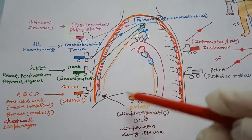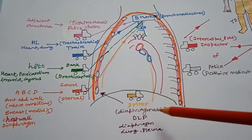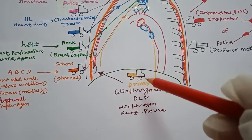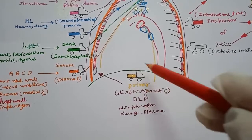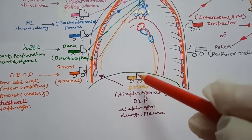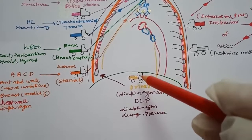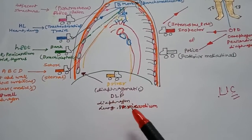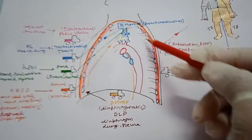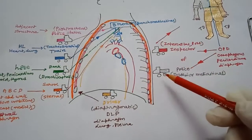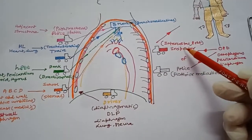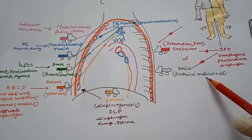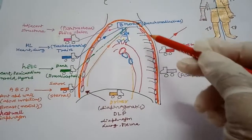The middle row of the primary channel comprises only one group: the diaphragmatic lymph node. Using the mnemonic 'Dilip' — the driver's name — D stands for diaphragm, L for lung, and P for pericardium. The diaphragmatic lymph node first carries lymph to the para-external or external lymph node and then to the secondary channel.